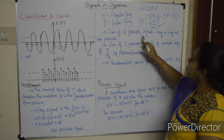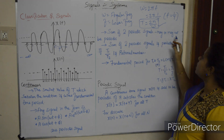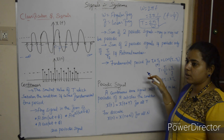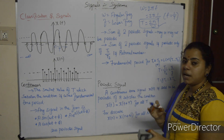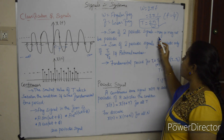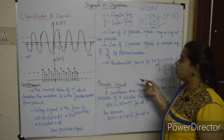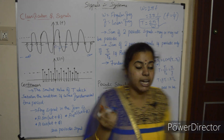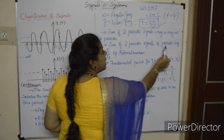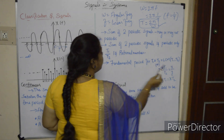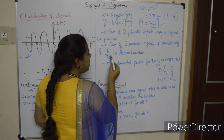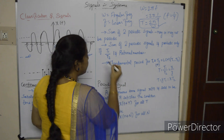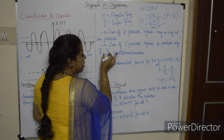The sum of two periodic signals may or may not be periodic. When two periodic signals are added, the result is periodic only if the ratio of their periods T1/T2 is a rational number.